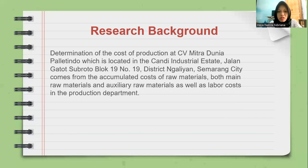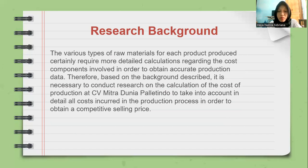The determination of the cost of production at CV Mitra Dunia Palitindo, located in the Candi Industrial Estate, Gatot Subroto Block 19, Ngaliyan District, Semarang City, comes from the accumulated cost of raw materials — both main and auxiliary raw materials — as well as labor costs in the production department. The various types of raw materials for each product produced certainly require more detailed calculation regarding the cost components involved.